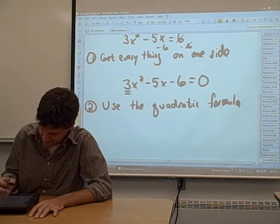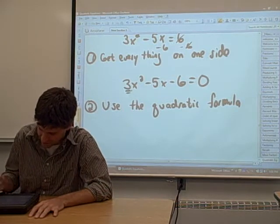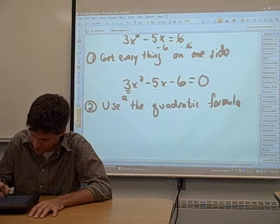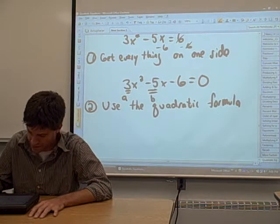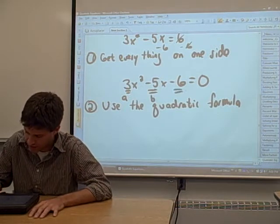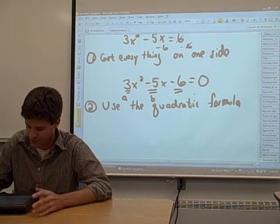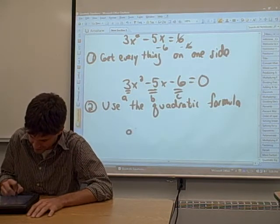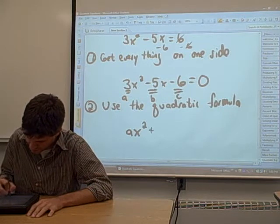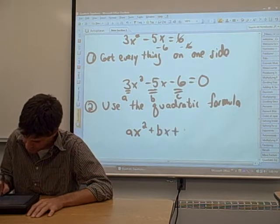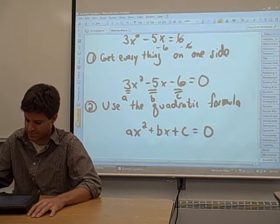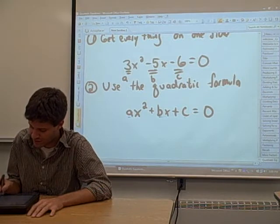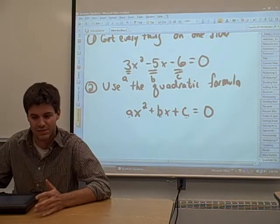If we call the coefficient on the x squared term A, we call the coefficient on the x term B, and we call the coefficient without the x, the constant, we call that C. Then what we have is a general form for a quadratic equation. This is the quadratic equation in general. A, B, and C can be any constants, any numbers.